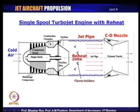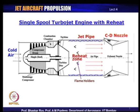Since there is no turbine after the reheat zone, the temperature introduced by the reheat can be much higher than what is possible through normal combustion, because in normal combustion the temperature is limited by the turbine blade material's capacity to withstand high temperatures. Since turbine blades are made of metal alloys, there is a certain limit to which temperatures can be raised at the turbine inlet. Turbine inlet temperature is quite often a limiting factor in turbojet engine design.